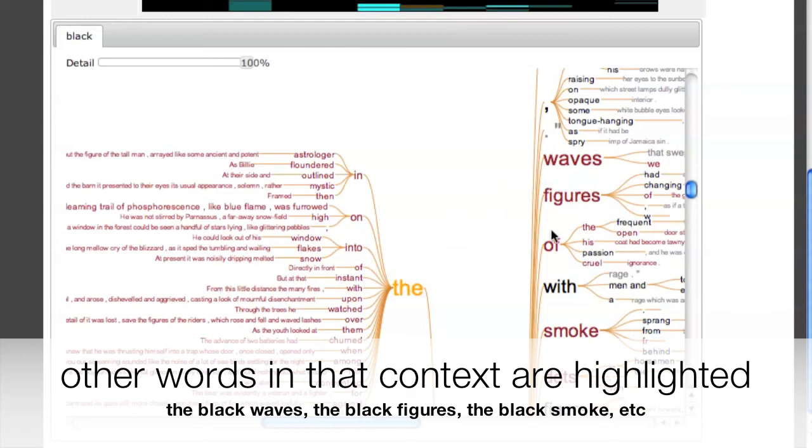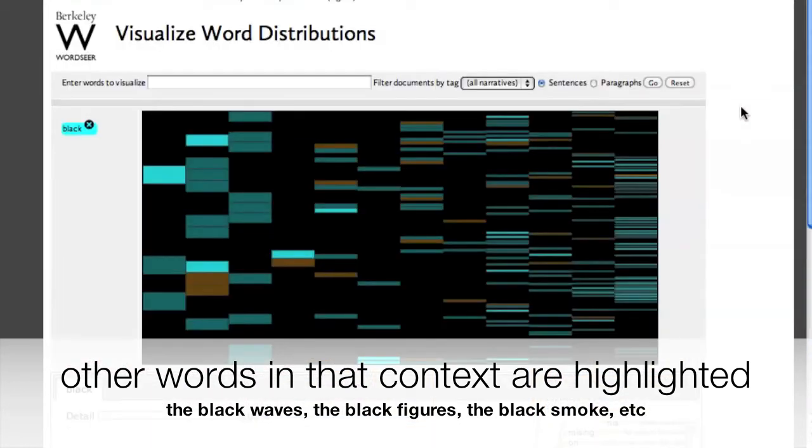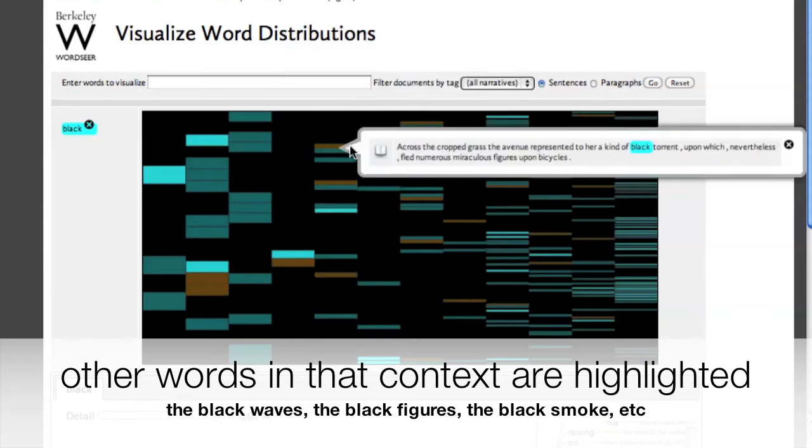Clicking on a part of the word tree highlights the other contexts that participate, as well as highlighting words in the heat map.